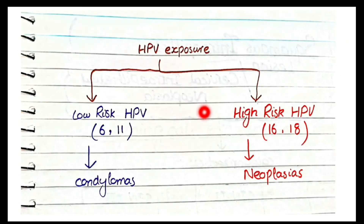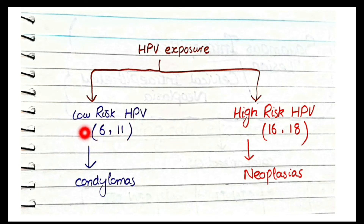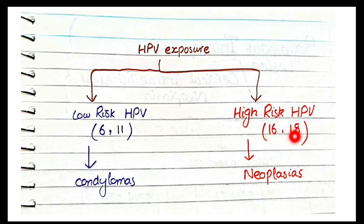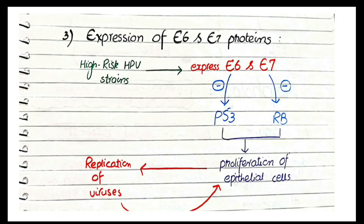HPV exposure can be to high-risk strains — types 16 and 18 — or low-risk strains — types 6 and 11. The low-risk strains 6 and 11 do not result in neoplasia; rather they result in condylomata acuminata. But the high-risk variants 16 and 18 do result in neoplasia.